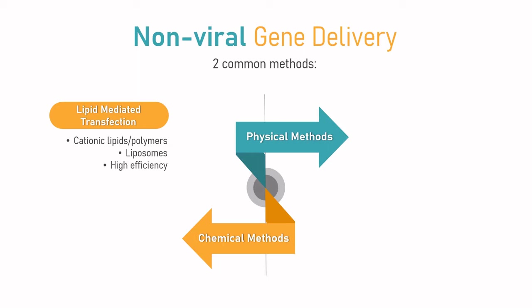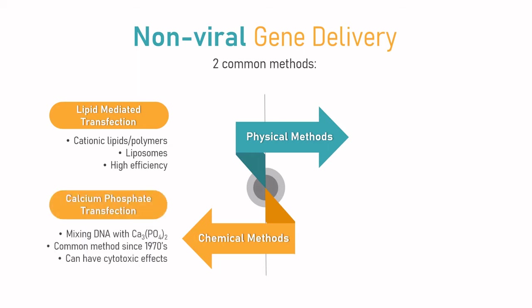The principle of calcium phosphate transfection involves mixing the DNA with calcium phosphate to form a precipitate. Calcium phosphate also helps in binding to the cell surface, and from there the DNA enters the cell by endocytosis. This has been a common method since the early 1970s due to its inexpensive components that are easy to avail. Depending on the cell type, however, calcium phosphate may not be a suitable transfection method as it can have cytotoxic effects. In addition, reagent consistency such as small changes in pH can result in compromised transfection efficiency.